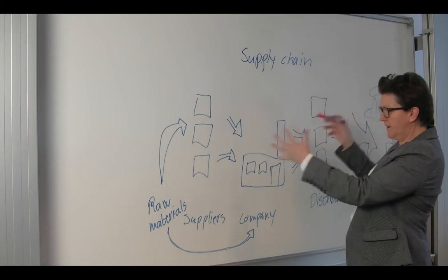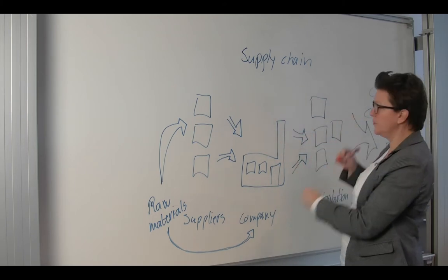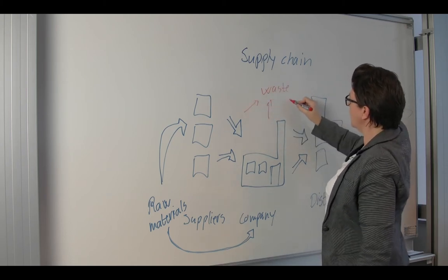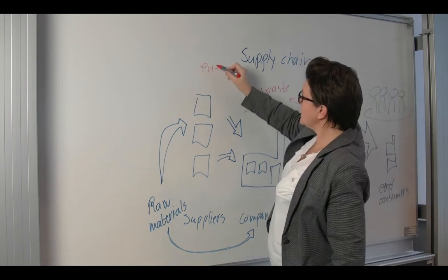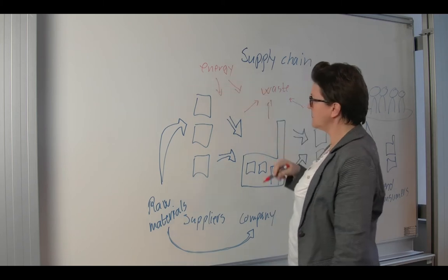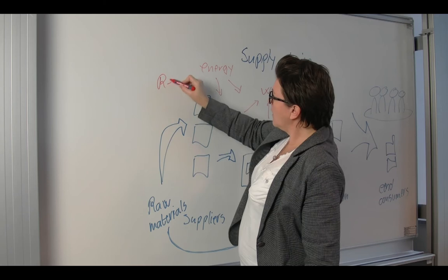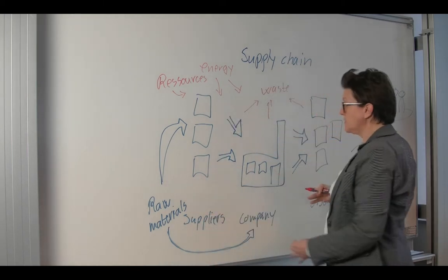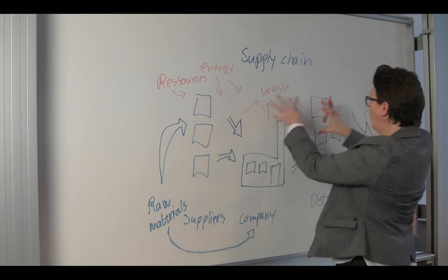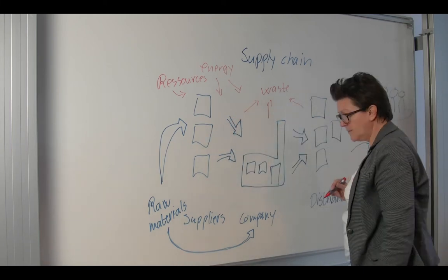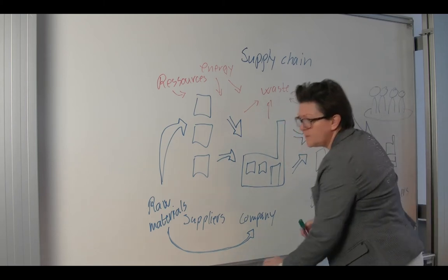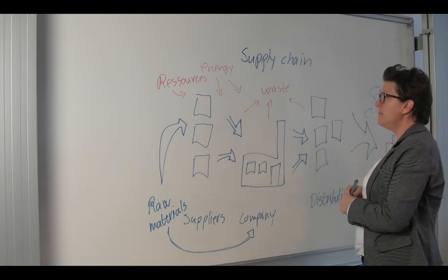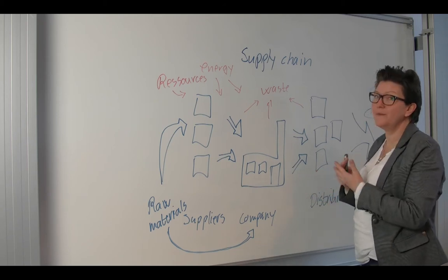This system creates different things apart from what we produce. The whole system produces waste at different levels. Also the whole system takes energy coming in. All kinds of resources go into the system — natural resources but also human resources. And needless to say, the whole thing is being transported through the system as well.